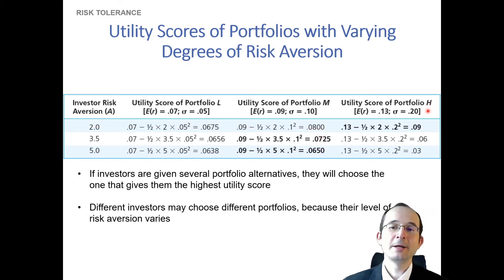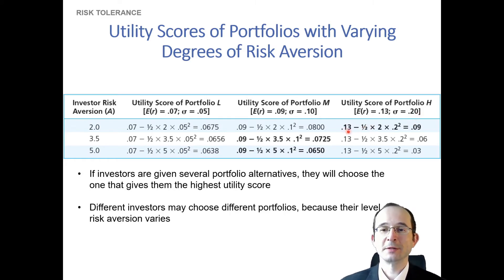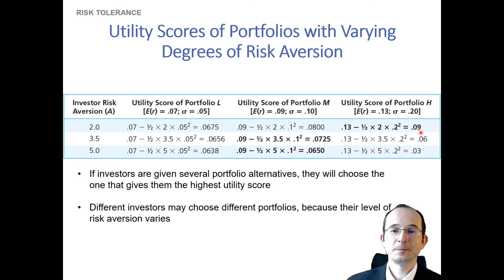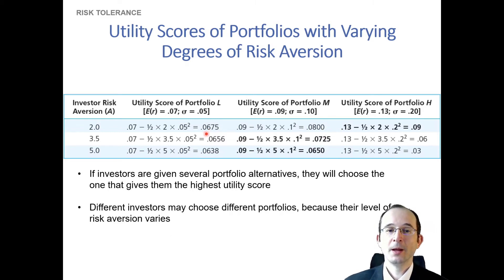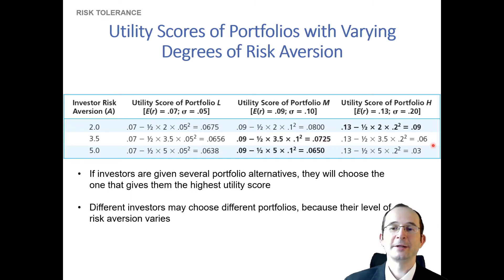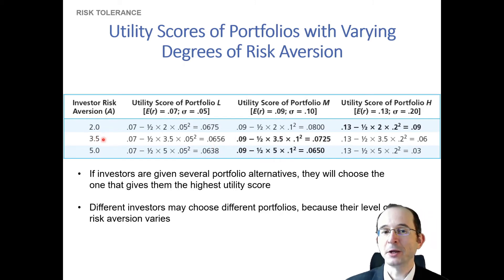For the high risk portfolio with an expected return of 13% and a standard deviation of 20%, the lower risk aversion investor gets the highest utility score of the three options: 0.09. So this investor would find the high risk portfolio preferable, since it has higher utility than either the medium at 0.08 or the low at 0.0675. For the middling risk aversion investor, the medium risk portfolio offers the highest utility score — higher than both the high risk and the low risk options. This is consistent with the idea that this investor assigns a bigger penalty to risk, so they prefer the middle risk portfolio.